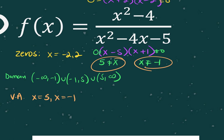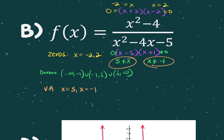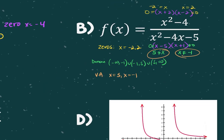It didn't ask for it, but your horizontal asymptote would be y equals one again.